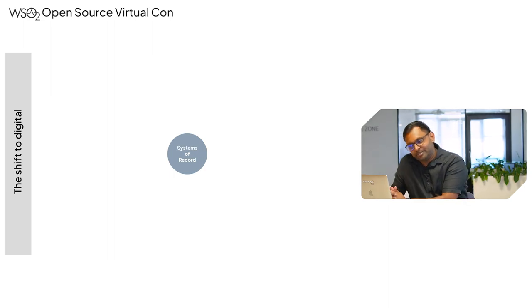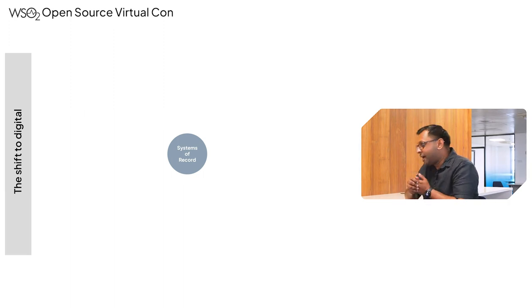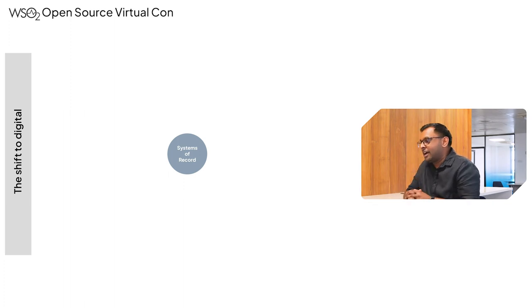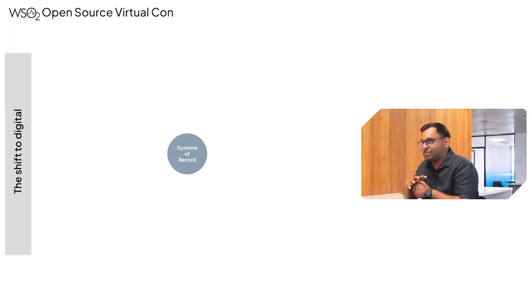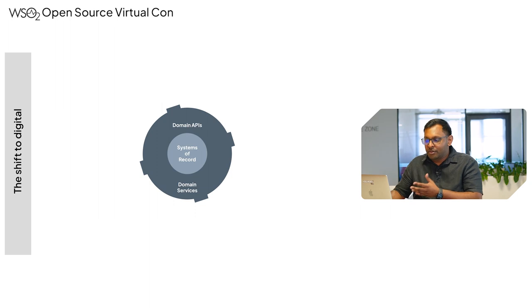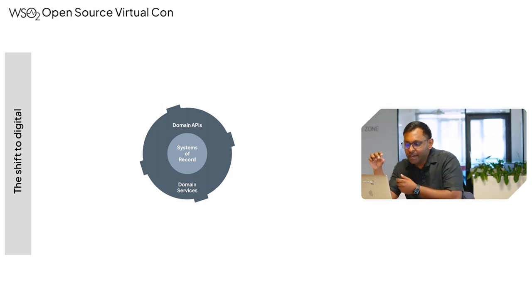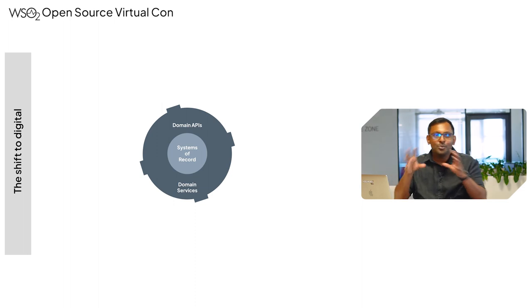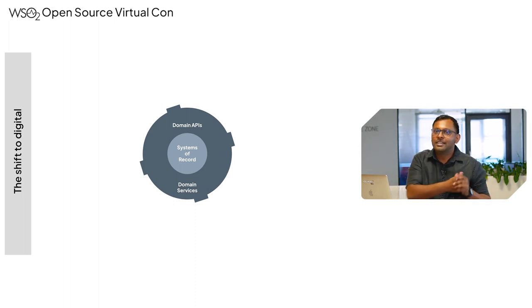As I switch to this diagram, it all starts with systems of record — your HR application, financial applications, ERP, CRM, and so on. These come with their domain APIs or domain services that encapsulate these systems of record. As organizations go down the digital journey, they end up building experience APIs that help the consumption of these domain APIs and domain services. This is where our API management and integration technologies come into play.